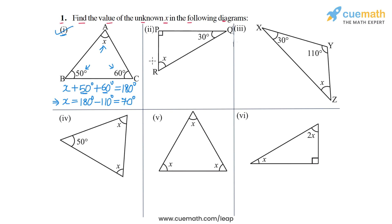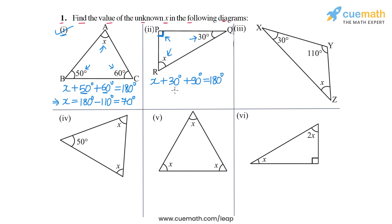In part 2, the three interior angles are x, 30 degrees, and this angle which is indicated to be 90 degrees. So we can write x plus 30 degrees plus 90 degrees will be equal to 180 degrees.